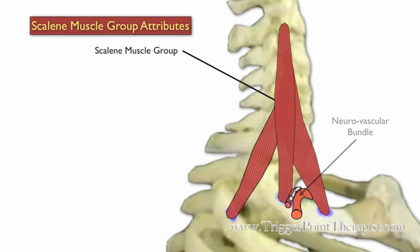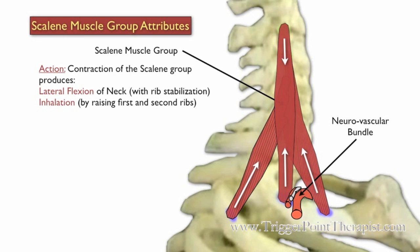Here's the muscle, and you'll notice the neurovascular bundle exiting between the anterior and middle branches of the scalene. Contraction of the scalene group produces lateral flexion of the neck when the rib is stabilized, and also inhalation by raising the first and second ribs.